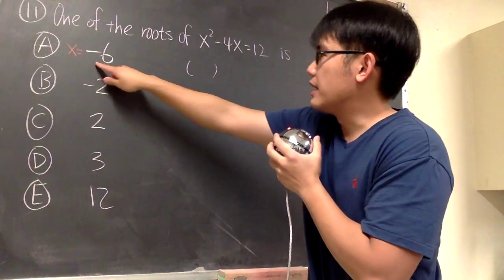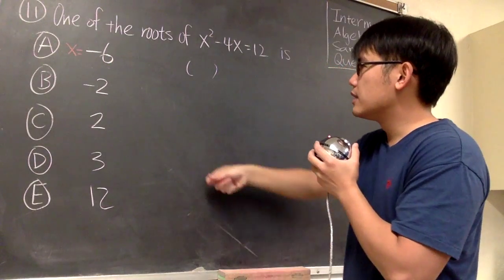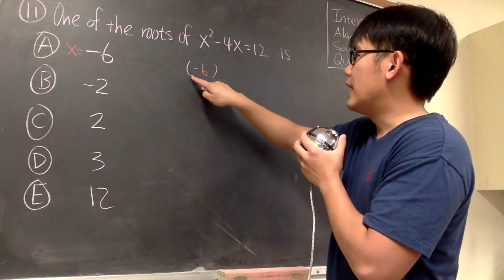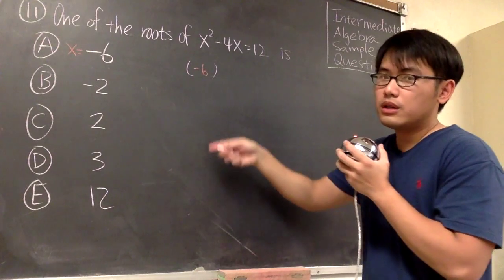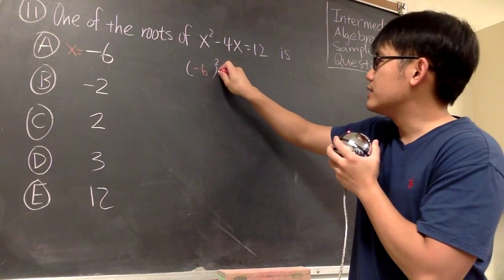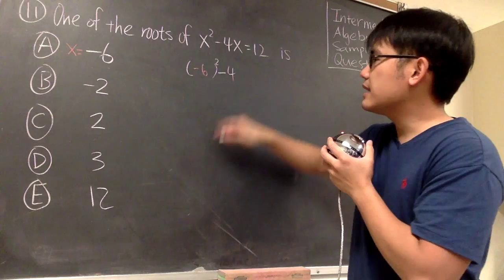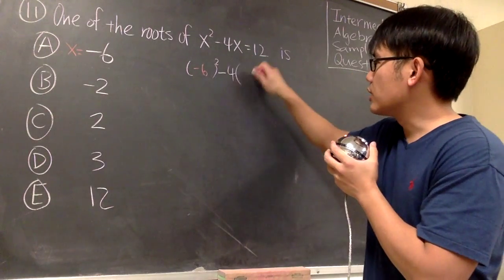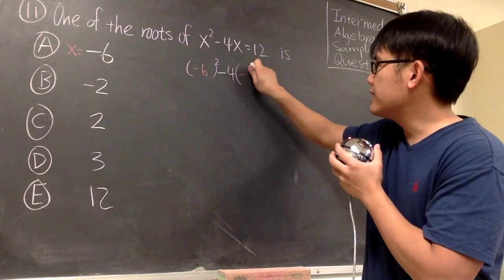Let's open the parentheses, plug in negative 6 into this parentheses, and then we have to raise this to the second power, and then continue with that by subtracting 4 times x. The x is negative 6, so I open the parentheses and then put in negative 6.